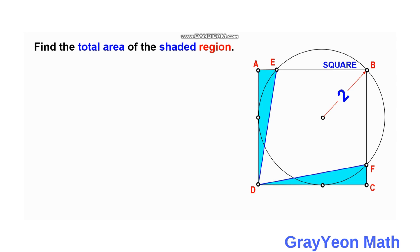The first thing we can do is draw the radius from the center to the point of tangency downwards to the base of this blue triangle, and we label this as 2 units as well because it is also the radius. Our strategy is to get the length of the side of the square and also the length from the intersection to the corner of the square. We multiply that by one half to get the area of a single triangle, then multiply by two to get the total area.